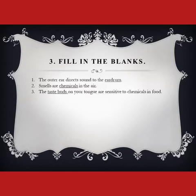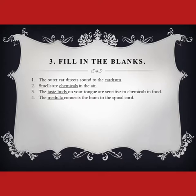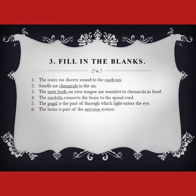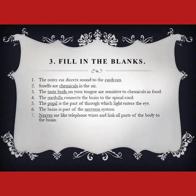Statement four: the blank connects the brain to the spinal cord — the answer is the medulla. Statement five: the blank is the part through which light enters the eye. The pupil is the dark part of the eyeball which directs light, and basically the retina is where the image is formed. Statement six: the brain is part of the nervous system, and blanks are like telephone wires linking all parts of the body — those thin wires inside our body are called nerves. So nerve is the answer.